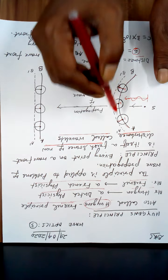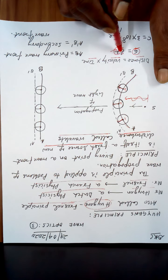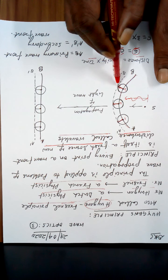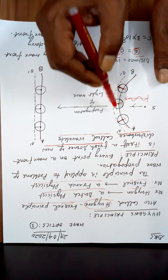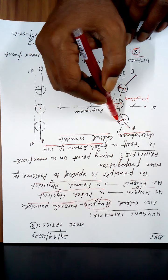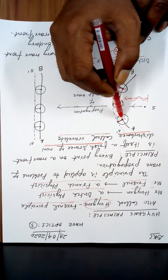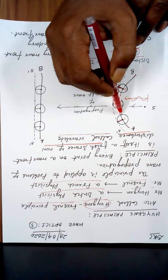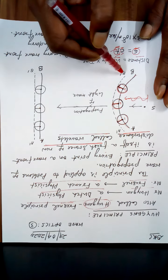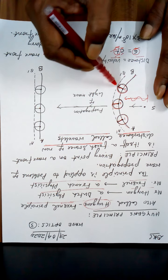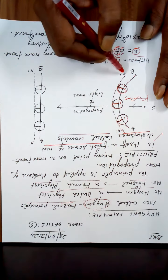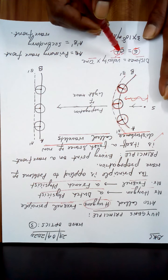This distance will be speed into time T, and similarly for each point on the wavefront. I take this distance as the radius and draw a circle here, another circle here, and another circle here. Now, A'B' — this dotted line — is a common tangent to these three circles. According to this principle, A'B' is again a wavefront, called the secondary wavefront.